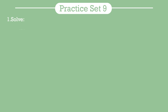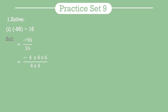Let's begin Practice Set 9, Question 1. First example: minus 96 divided by 16. We write this as minus 96 upon 16, then factorize: 96 = 4 × 4 × 6 and 16 = 4 × 4. We cancel the common factor of 4 twice from numerator and denominator. What remains in the numerator is minus 6, so our answer is minus 6.